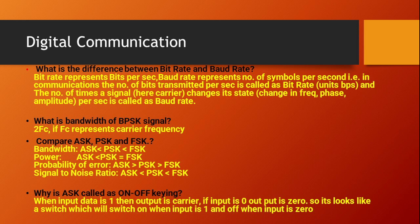What is the bandwidth of BPSK? The bandwidth of BPSK is 2fc, where fc represents the carrier frequency. Comparing ASK, PSK, and FSK: bandwidth — ASK less than PSK less than FSK; power — ASK less than PSK, PSK equal to FSK; probability of error — ASK greater than PSK greater than FSK; signal-to-noise ratio — ASK less than PSK less than FSK. Why is ASK called on-off keying? When input data is one, output is the carrier; when input is zero, output is zero — so it acts like a switch.